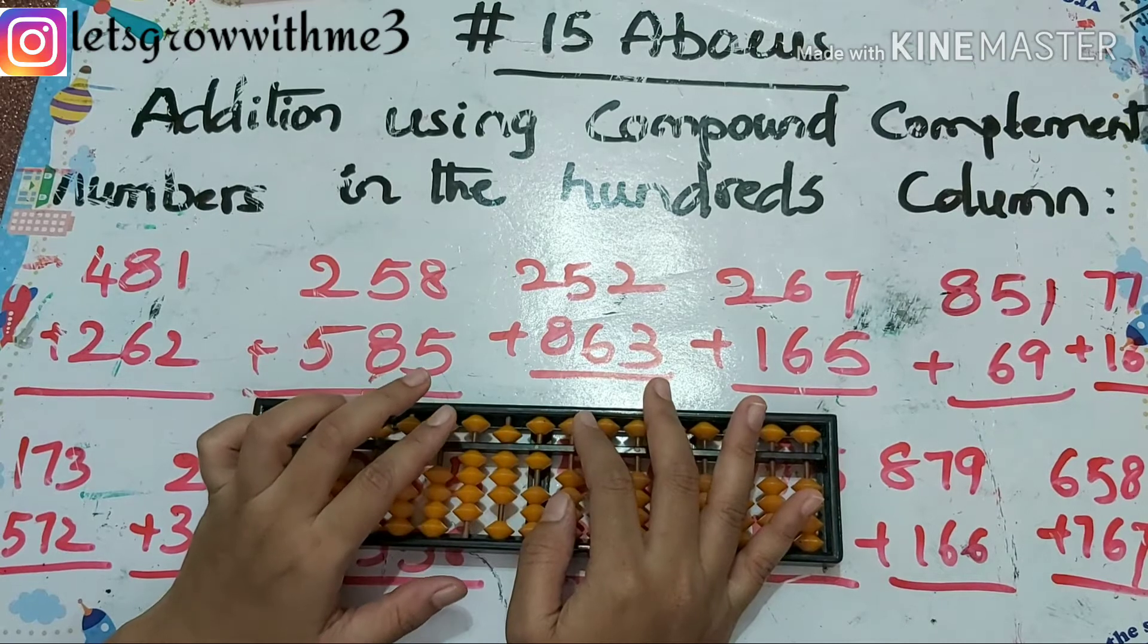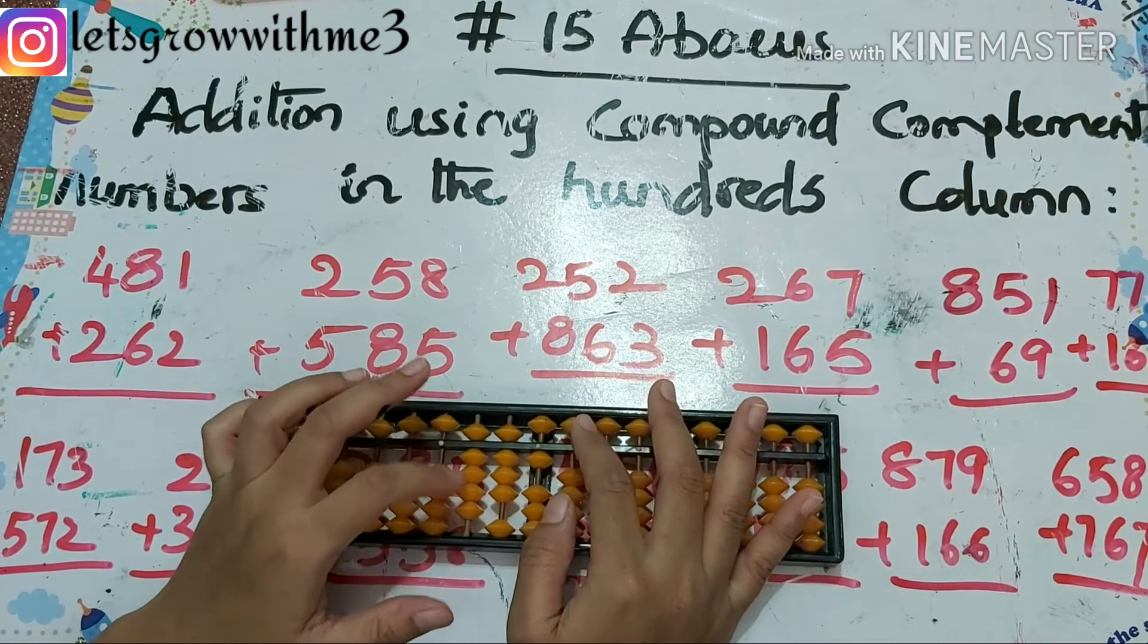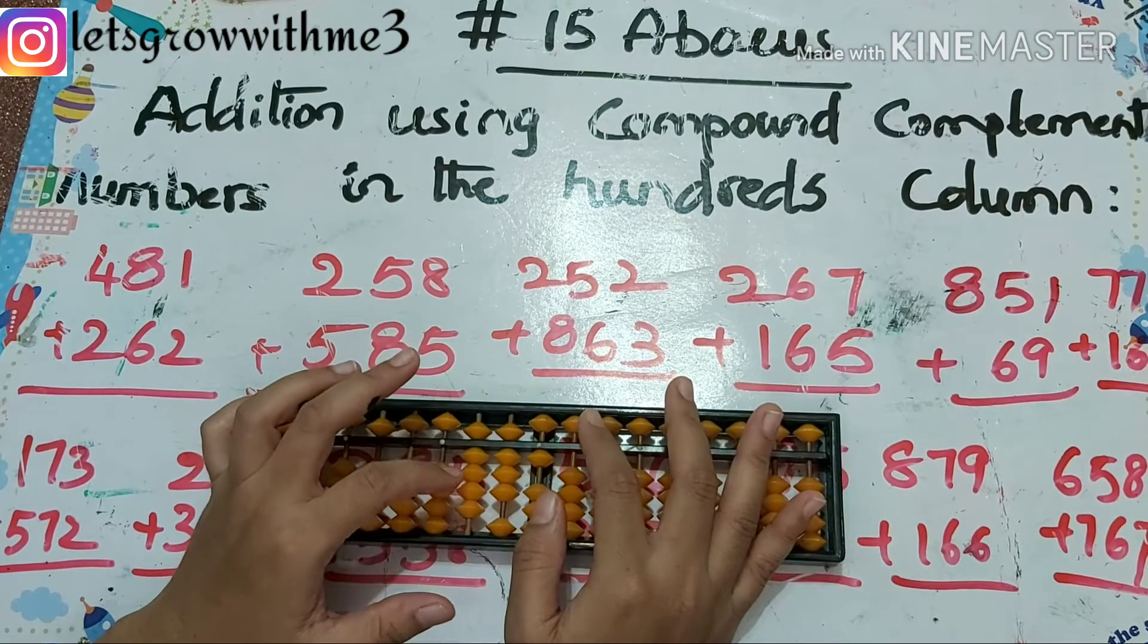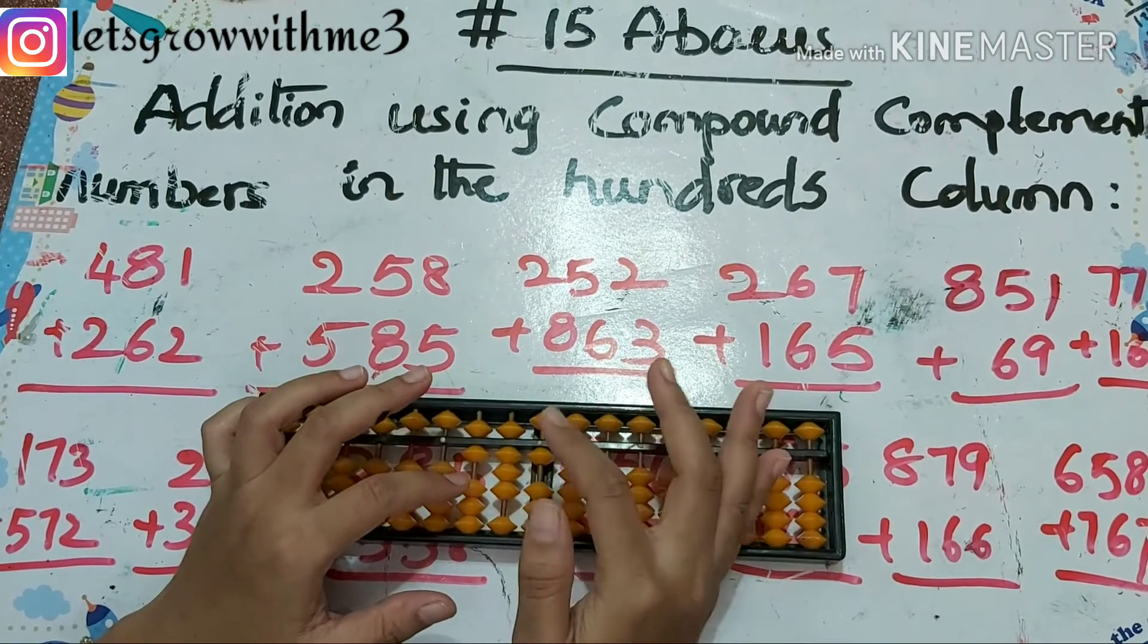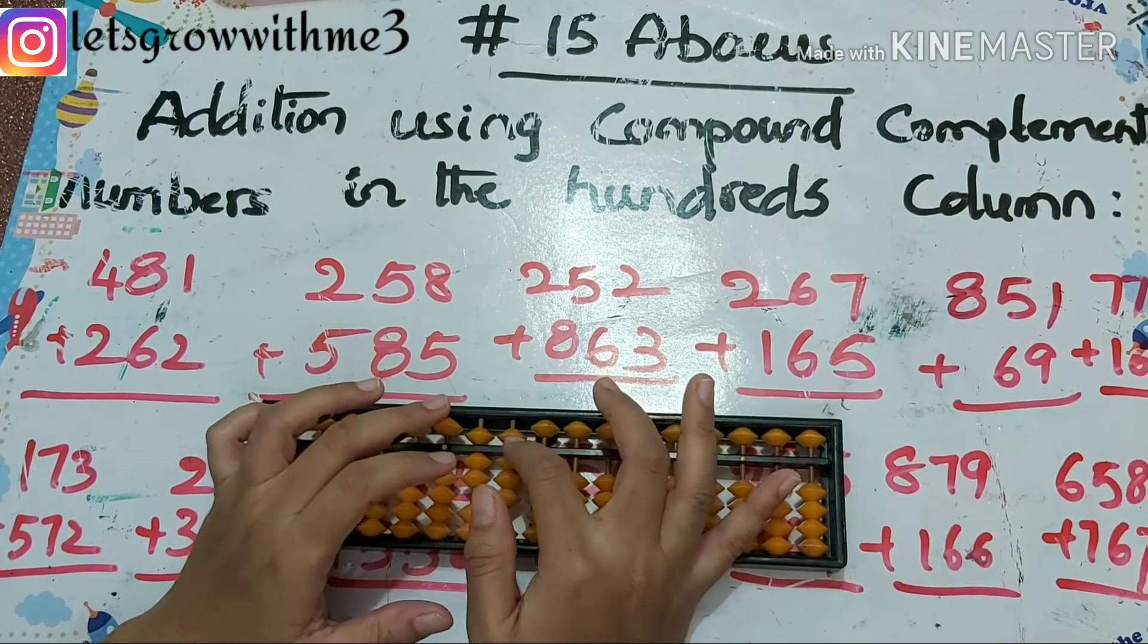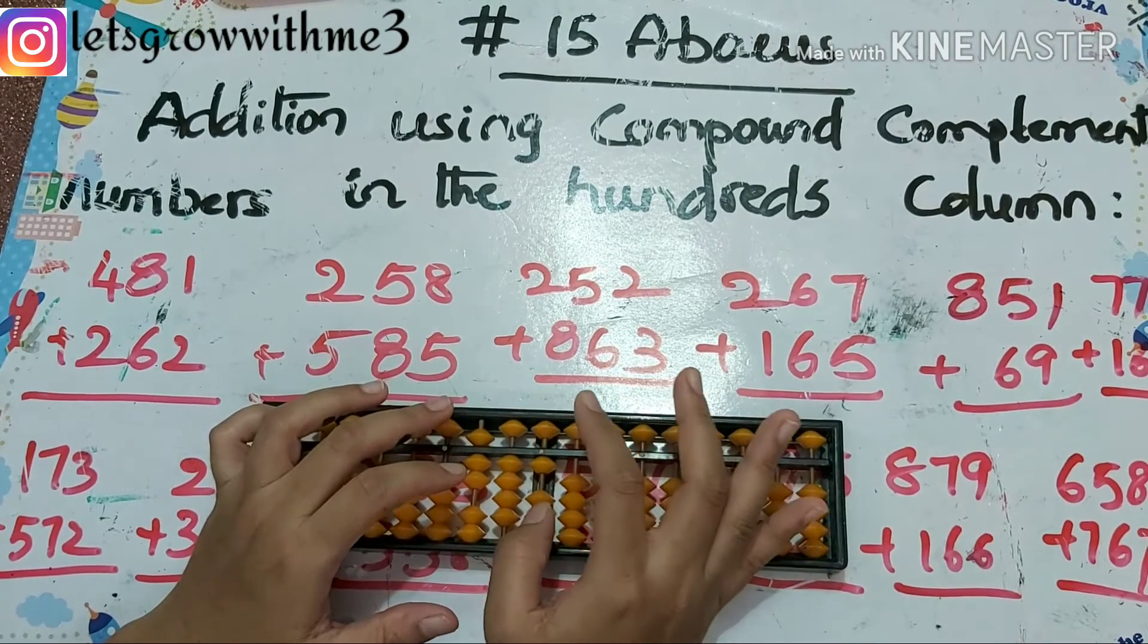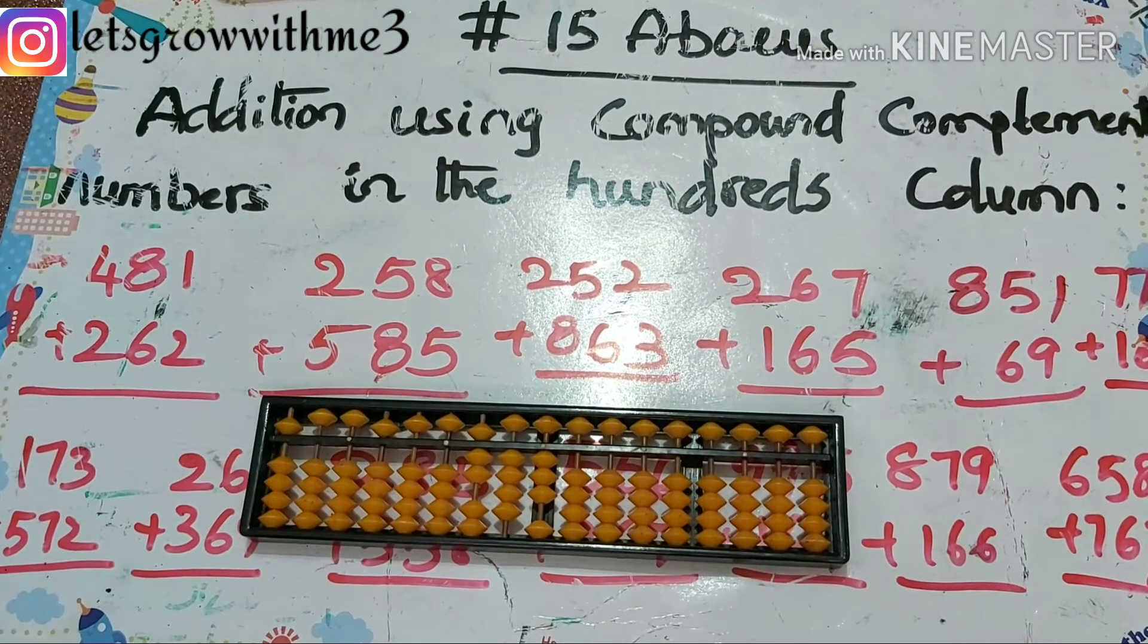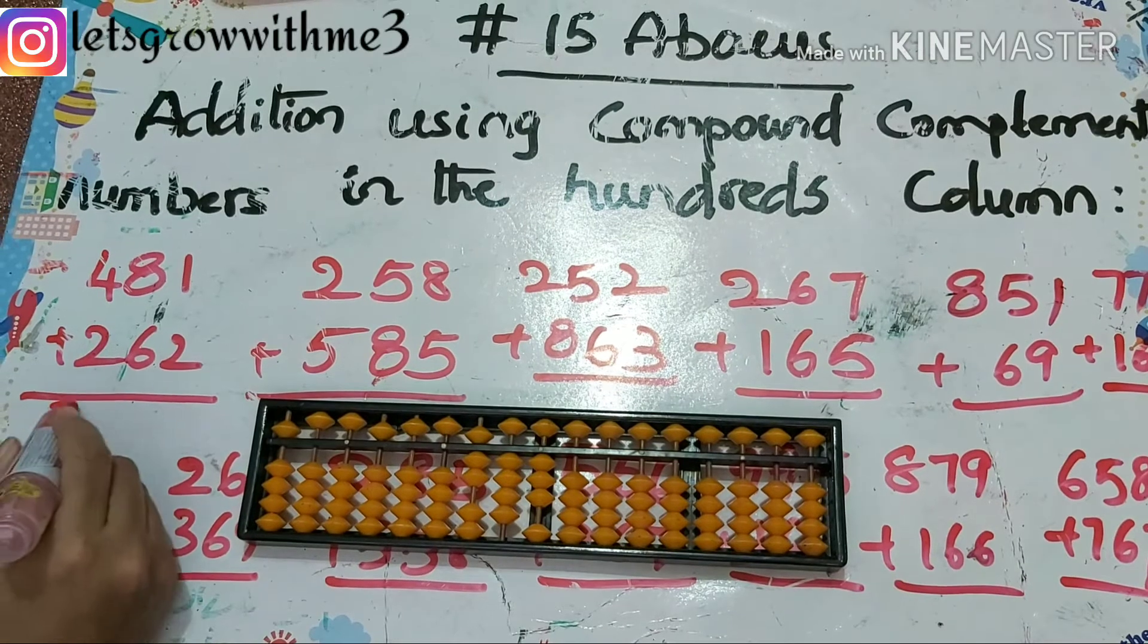So 2, how to add 2? Plus 5 minus 3. And 6, so we have to go for combination - papa up, mama up, babies up. Next you have to add 2 directly, so our answer is 743.